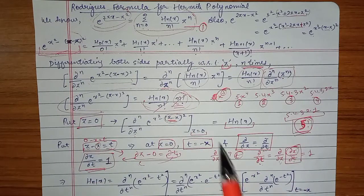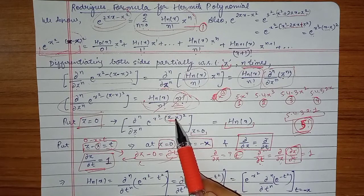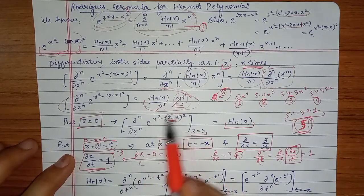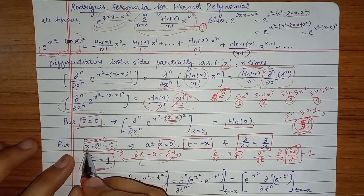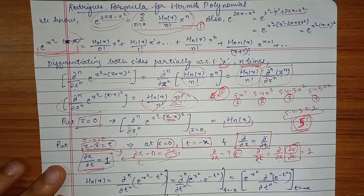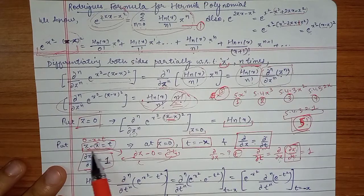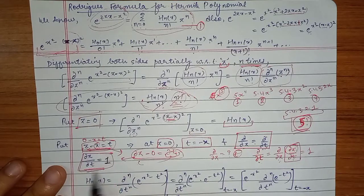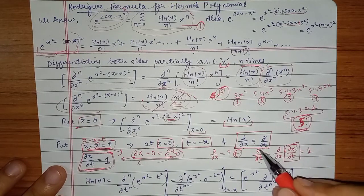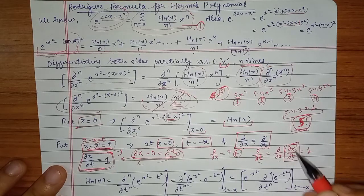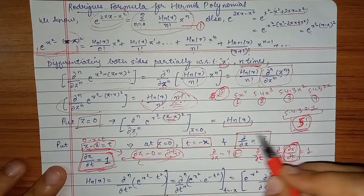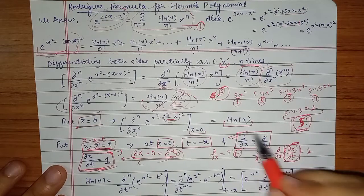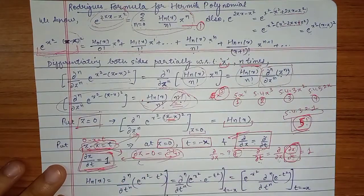So what we have done: we substituted z minus x = t in the exponential term. Since the function now depends on t, we need the partial derivative with respect to t. From ∂z/∂t = 1, we concluded ∂/∂t = (∂/∂z)·(∂z/∂t) = ∂/∂z. So ∂/∂z is equal to ∂/∂t, and we substitute this value into the equation.